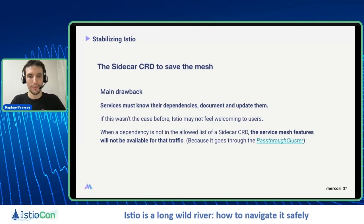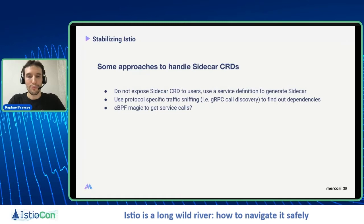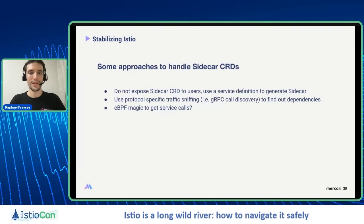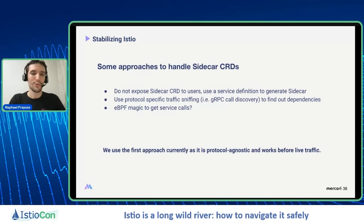We found some approaches to mitigate that. First, do not expose the sidecar CRD to users directly. Instead, try to use a service definition to generate the sidecar — users don't need to know the underlying implementation. You can use a format reusable for other purposes, such as egress security policy. Other options include protocol-specific traffic sniffing like gRPC call discovery to find dependencies, or eBPF magic to get the service calls. We are currently using the first approach because it's protocol-agnostic and works before having live traffic, whereas the second and third options require traffic to already be flowing.